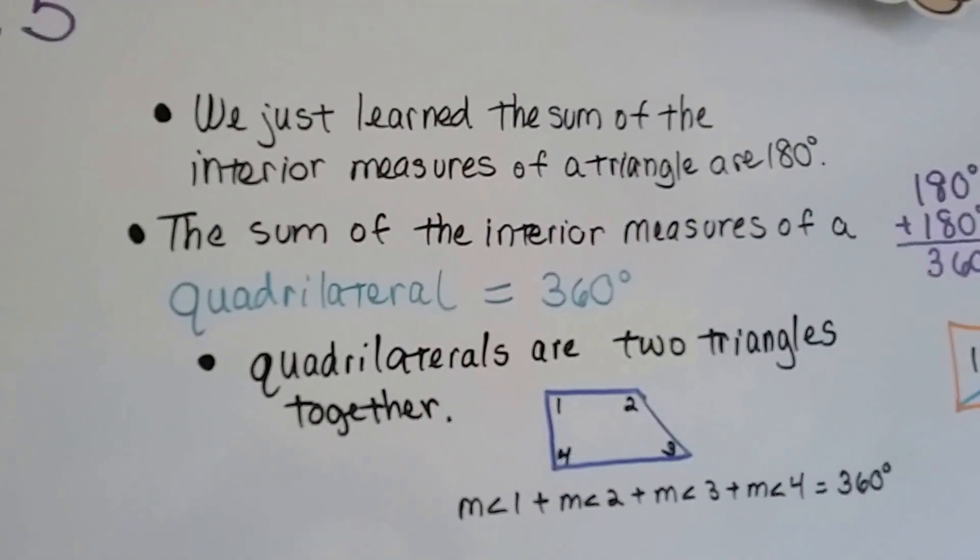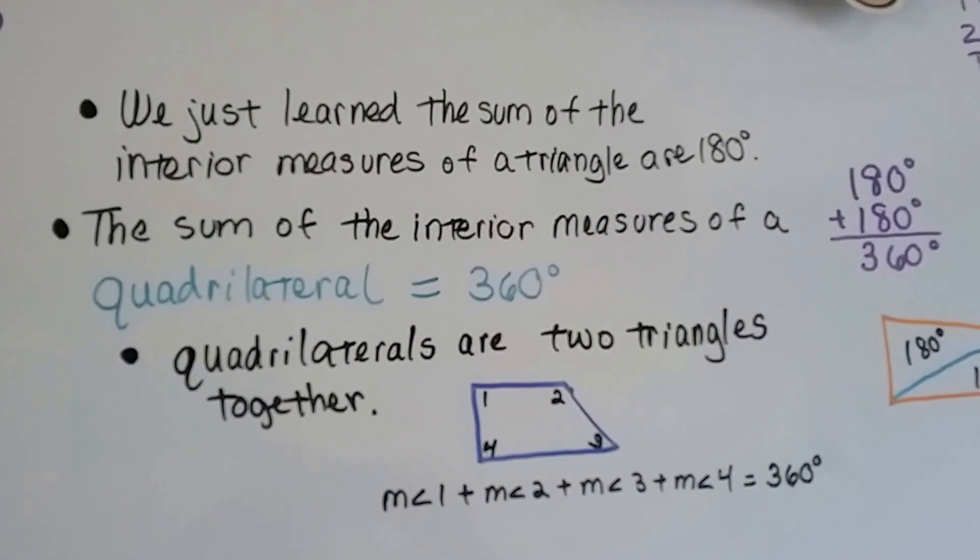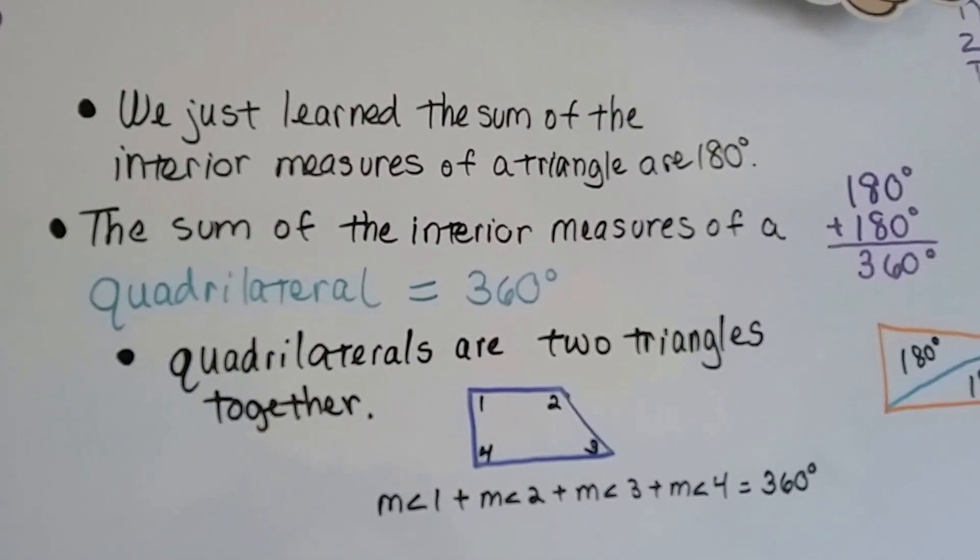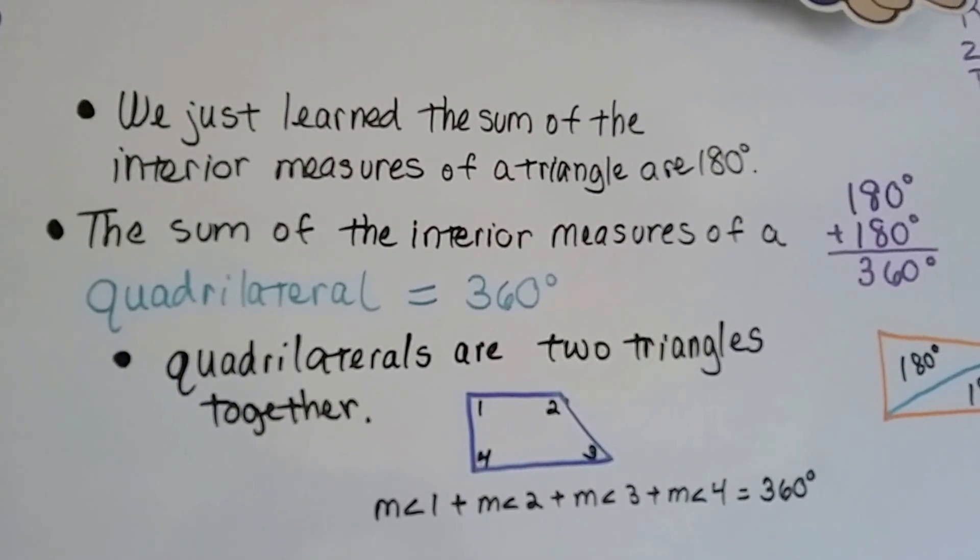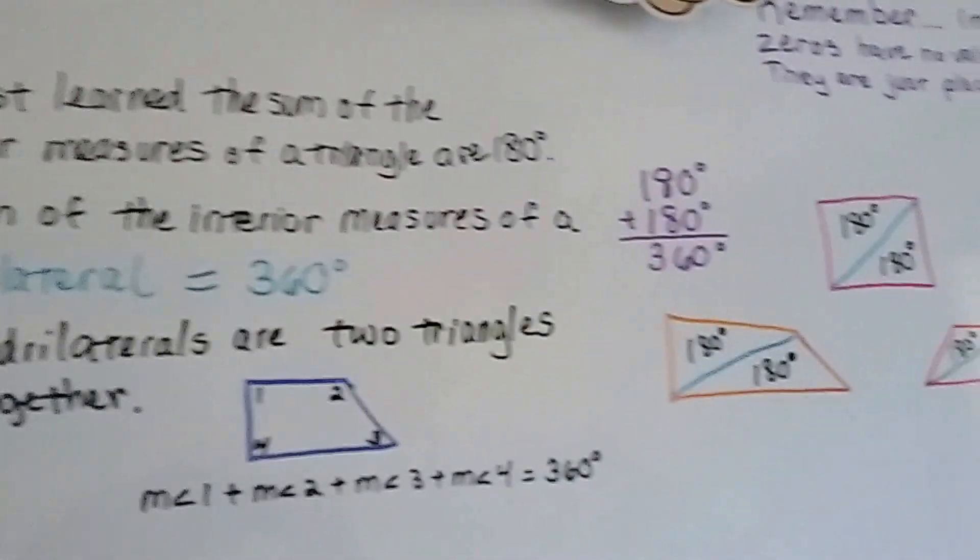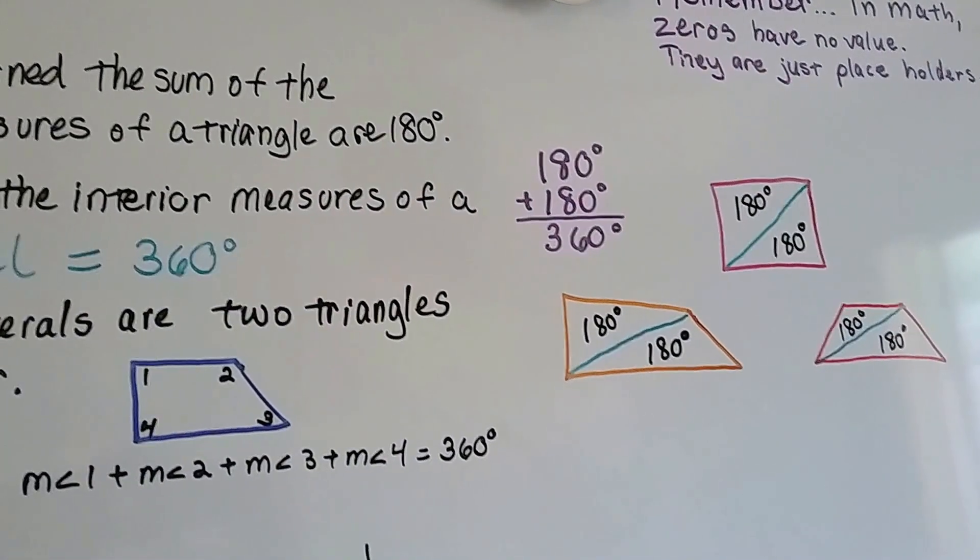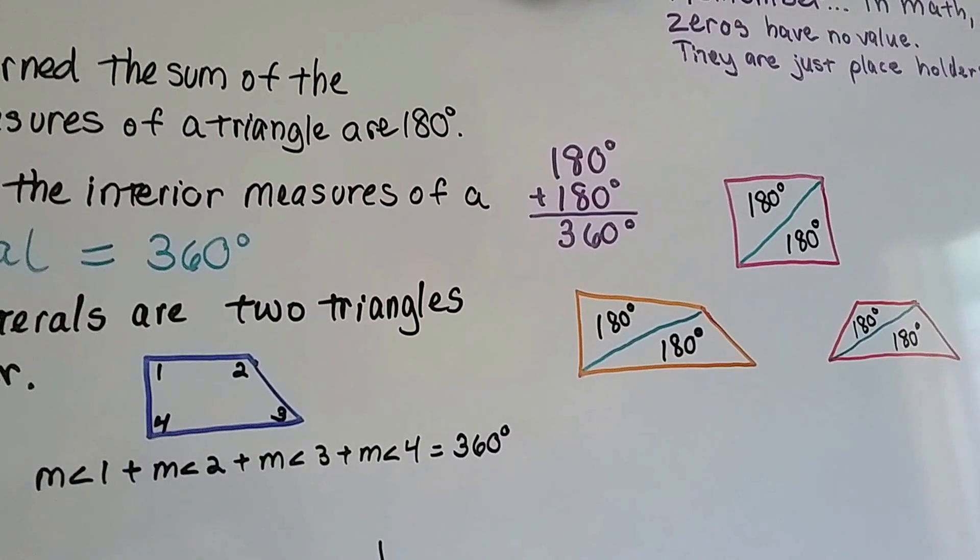We just learned the sum of the interior measures of a triangle are 180 degrees. Well, the sum of the interior measures of a quadrilateral are 360. Do you know why? Because they're two triangles put together. 180 and 180 equals 360.